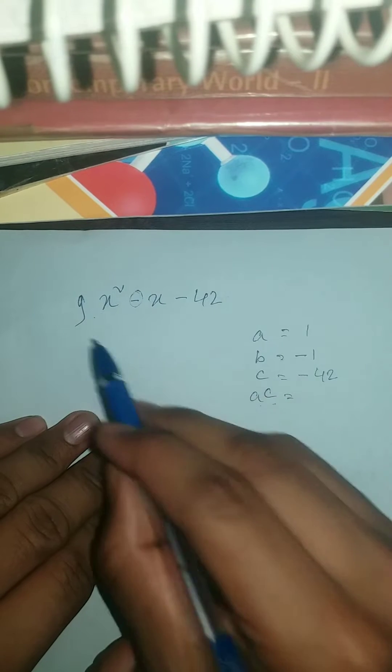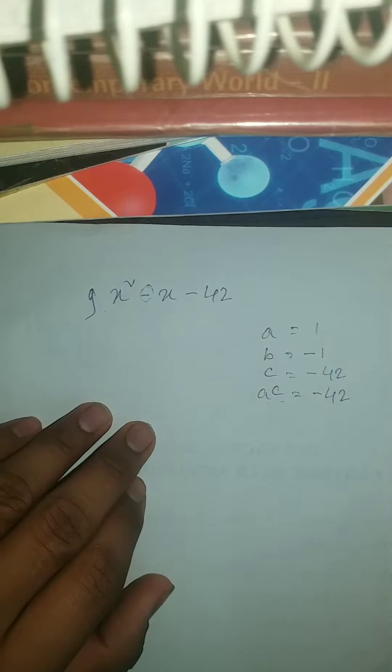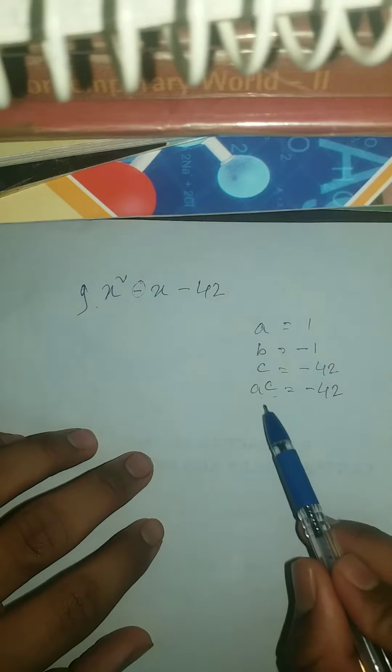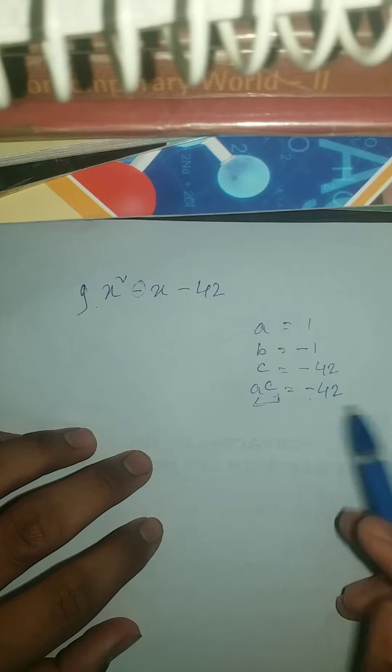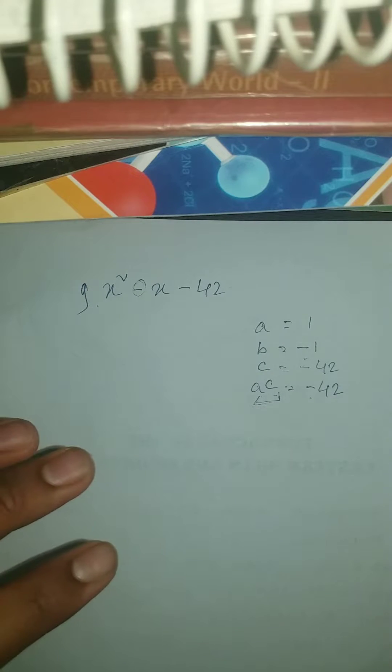And a into c is 1 into minus 42, which is minus 42. Now we need two numbers. If we multiply them, we're gonna get a into c, which is minus 42. And if we subtract or add them, we will get minus 1.